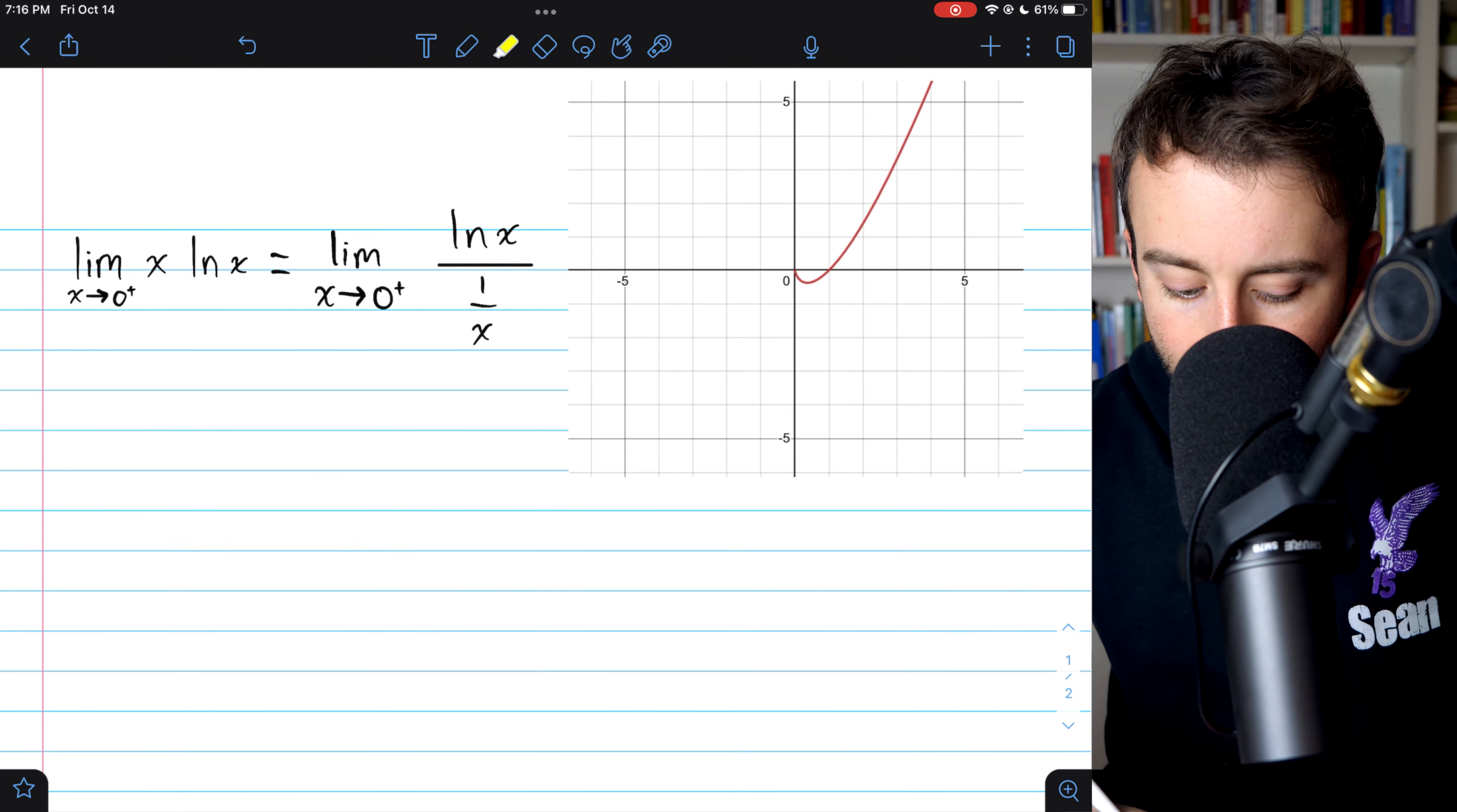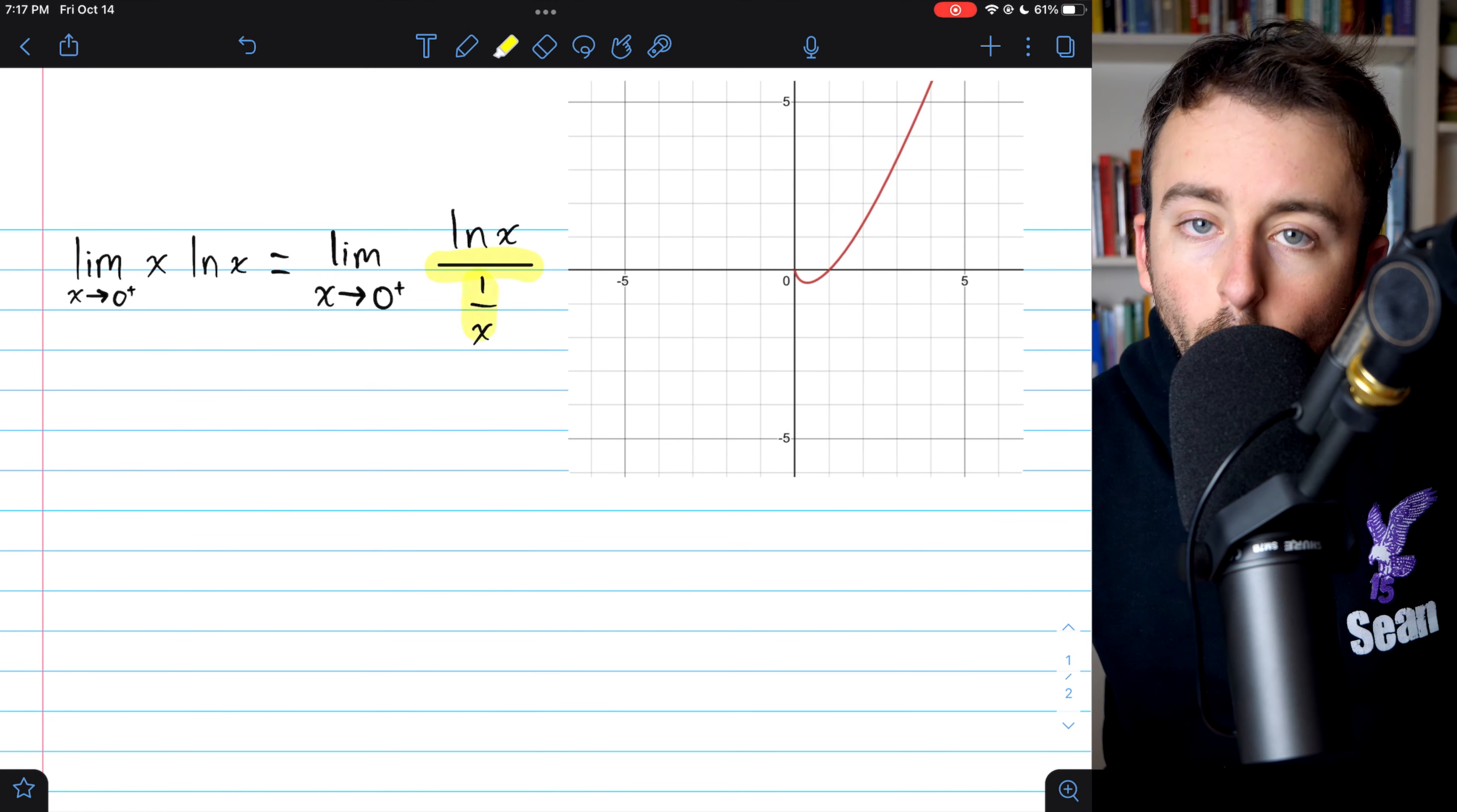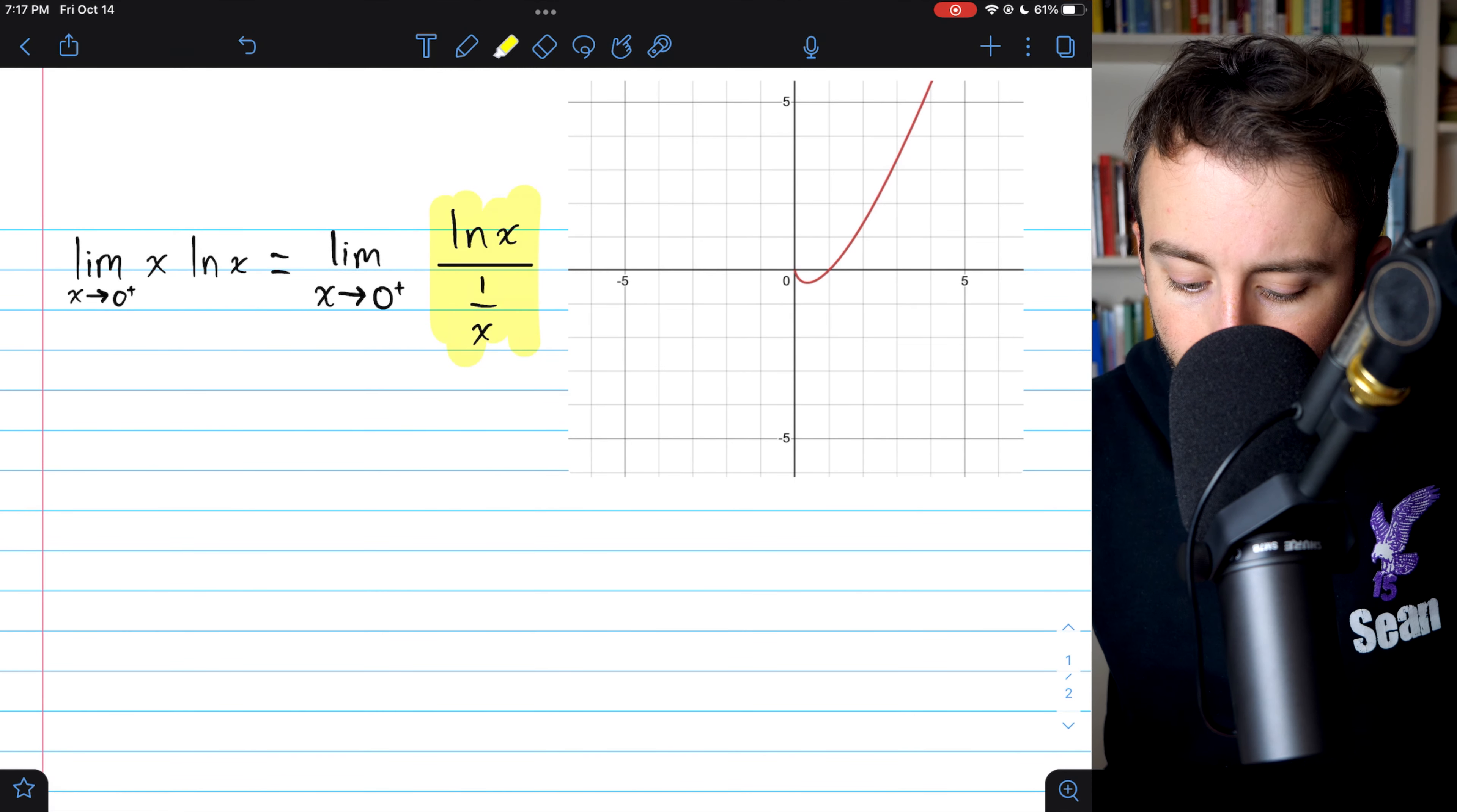we'll need to rewrite our function as a ratio of functions, which we can do like this. Instead of multiplying by x, we divide by one over x. That's the same thing. And now we've got a ratio of functions, so we can consider L'Hopital's rule.